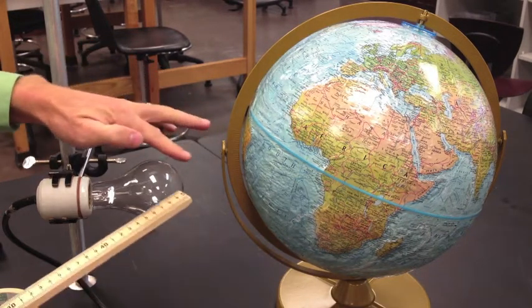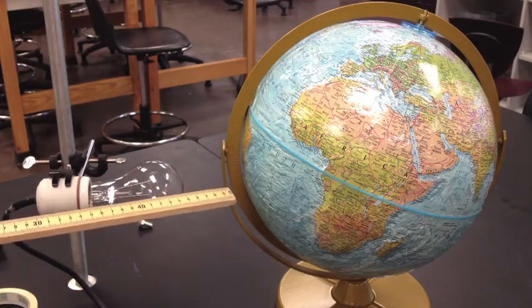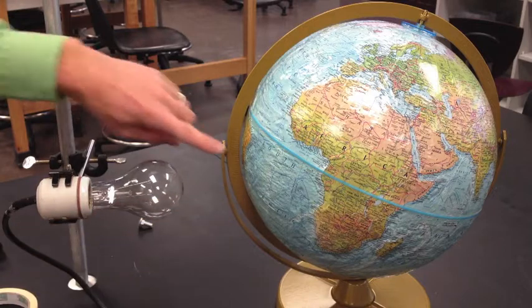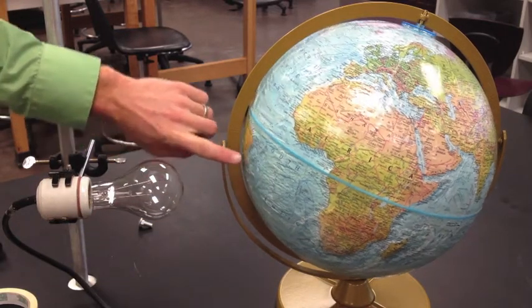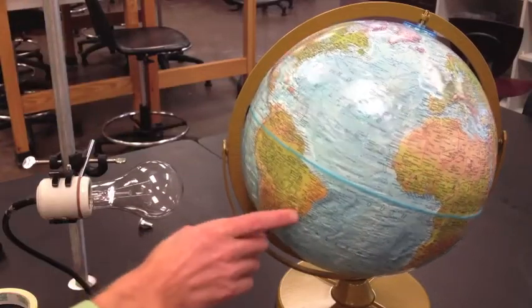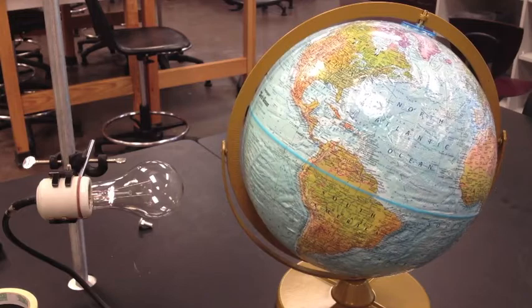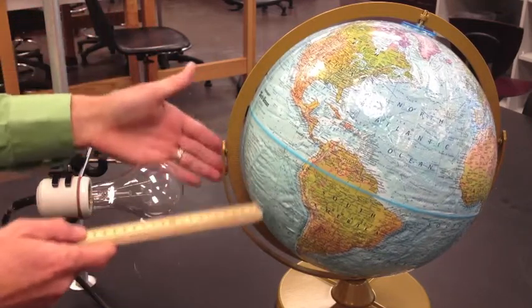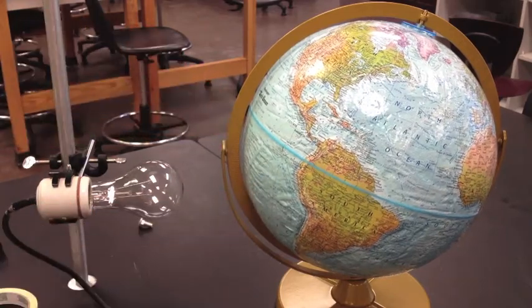There's a couple other things we want to check and make sure that they're in place. One is that the light bulb, which is our sun, is going to be set such that it is the first day of winter. On the first day of winter, you're going to have the sun in line with something called the Tropic of Capricorn. The Tropic of Capricorn is labeled on the globe as a dotted line, so you're going to eyeball it and make sure that the bulb, the center of the bulb, is in line with the Tropic of Capricorn.